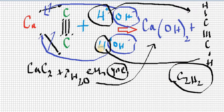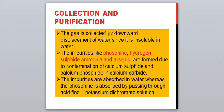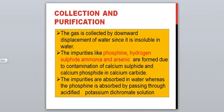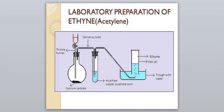The gas is collected by downward displacement of water since it is insoluble in water. Impurities like phosphine, hydrogen sulfide, ammonia, and arsenic are formed due to contamination from calcium sulfide, calcium phosphide, and calcium carbide. These impurities are absorbed in water, while phosphine specifically is absorbed by passing through acidified potassium dichromate or copper sulfate solution.